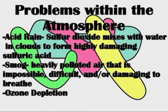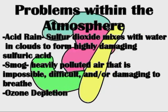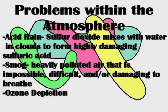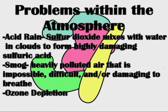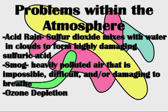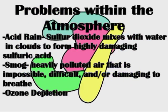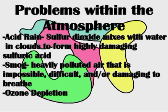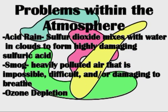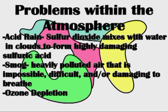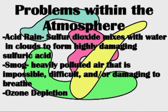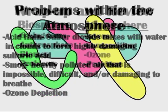Some problems that exist within the atmosphere are acid rain, which occurs when sulfur dioxide from volcanoes and human exhaust mixes with water and clouds to form sulfuric acid that, when it rains, causes serious damage to the surface. Smog is another problem — dense air pollution making air unbreathable or difficult to breathe. And also ozone depletion, which we discussed already.